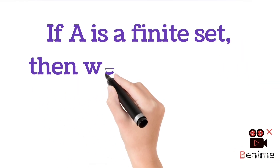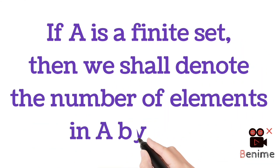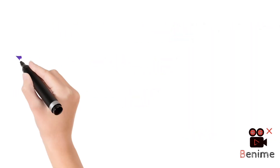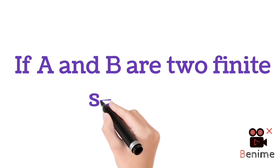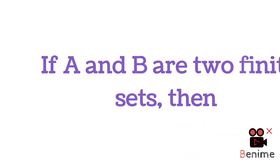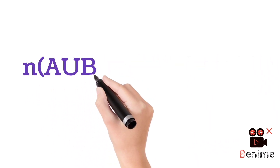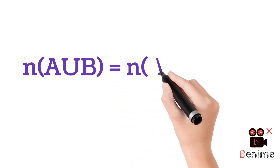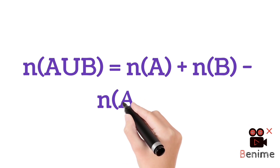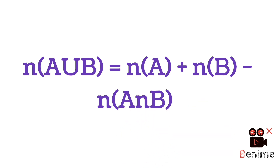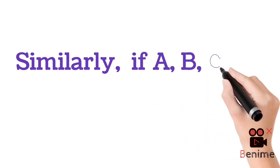If A is a finite set, then we shall denote the number of elements in A by N of A. If A and B are two finite sets, then the number of elements in A union B is equal to N of A plus N of B minus N of A intersect B.